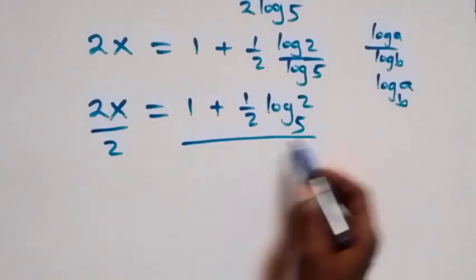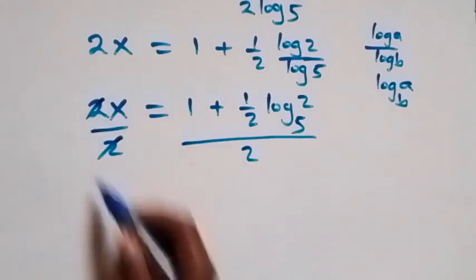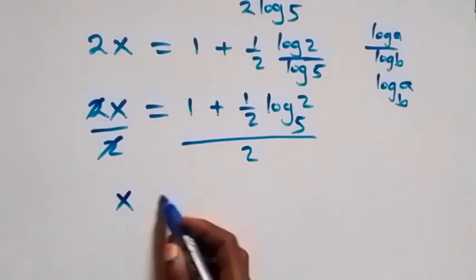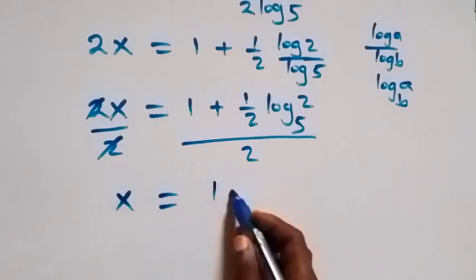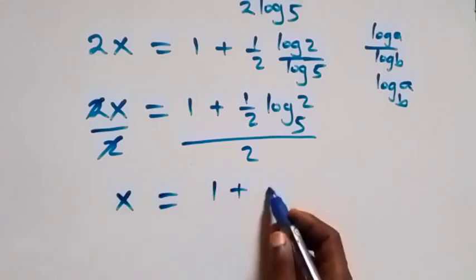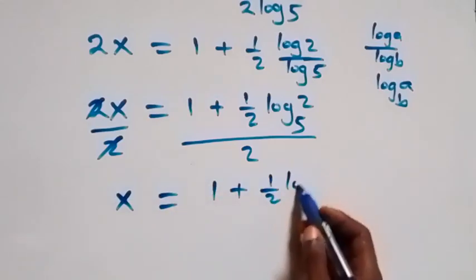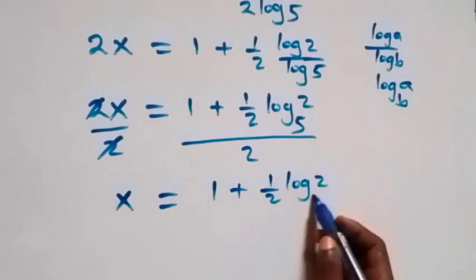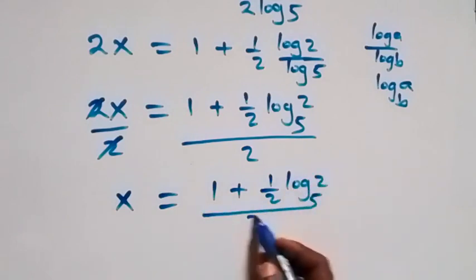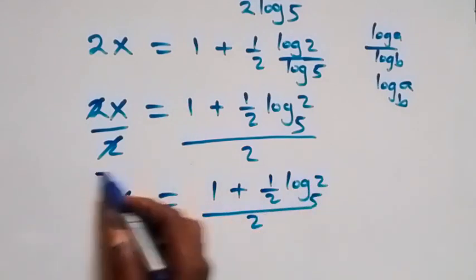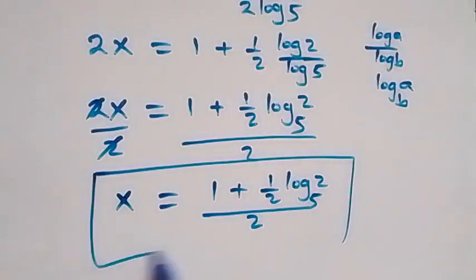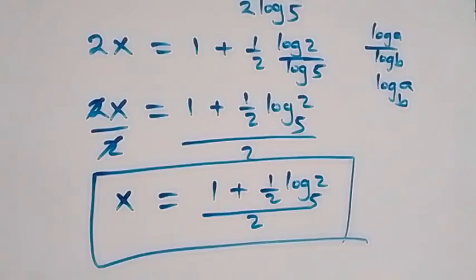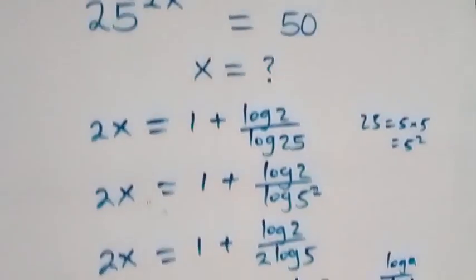To get x, we divide both sides by 2. This gives us x equals to (1 plus half log 2 base 5) over 2. So here we have the value of x in this problem.